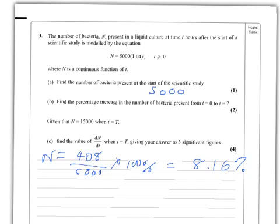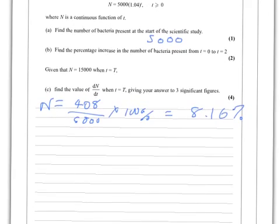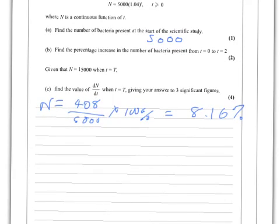Now, given that N=15,000 when t=T, let's get some space here. I'm going to substitute that into the equation, which you now see at the top. We get 15,000 = 5,000 times 1.04 to the power T, which tells us that 1.04 to the power T equals 3.